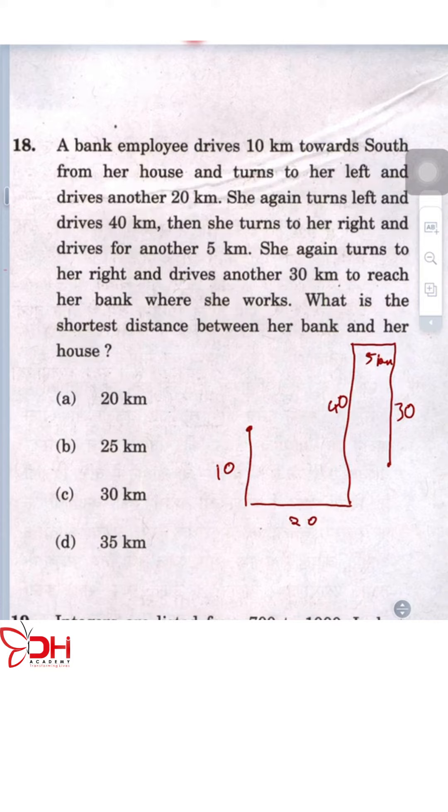Now what is the shortest distance between her bank and her house? Keep in mind over here this is 10 and this is 40 right. So if you say till here is 10, this entire thing will be 40.